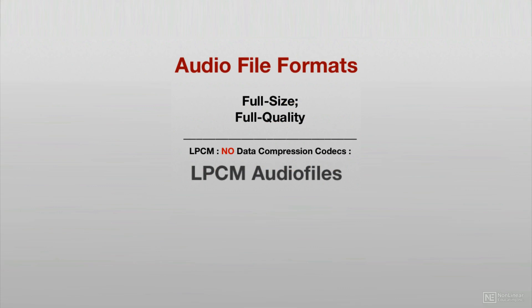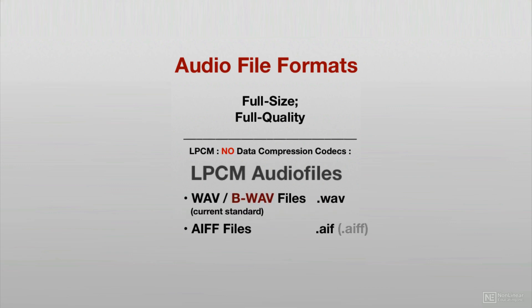Although there is another full-quality option, almost all professional audio is encoded as PCM files in one of two main audio file formats: WAV files or AIF files. The audio data is identical in both AIF and WAV audio files — they're interchangeable. There's an emerging consensus on WAV files as the new universal digital audio file format, and the most up-to-date version of the WAV standard is B-WAV, or broadcast WAV.